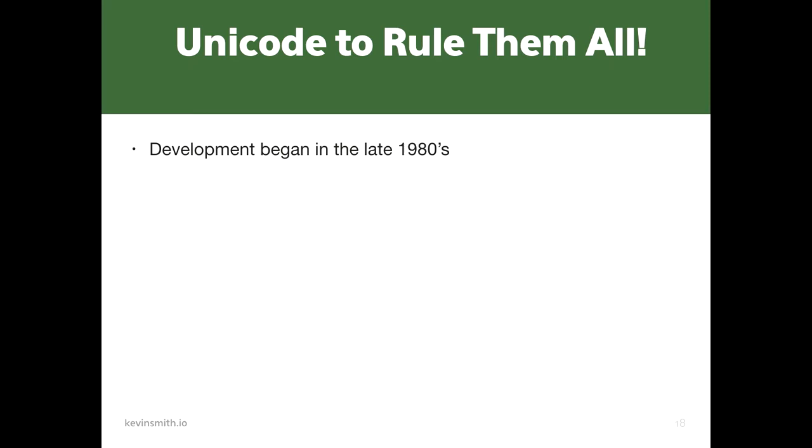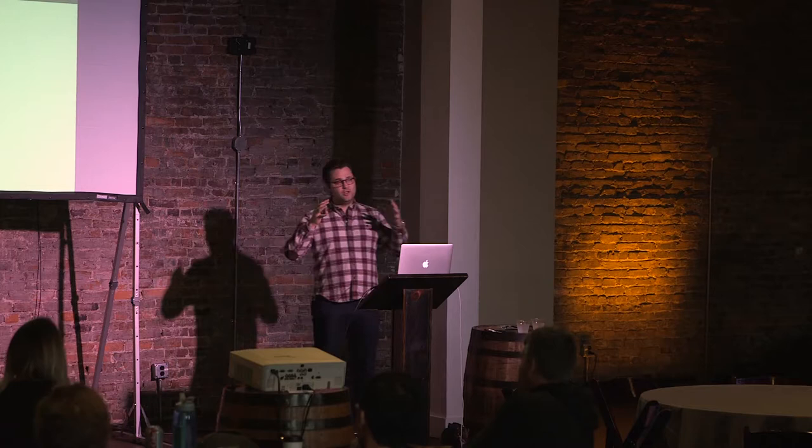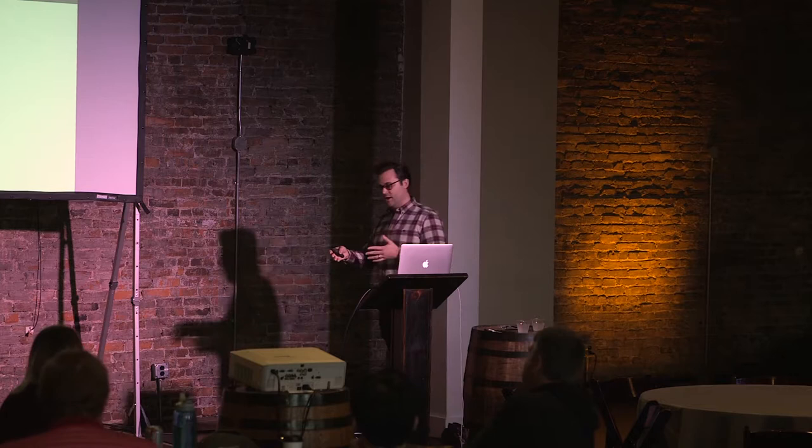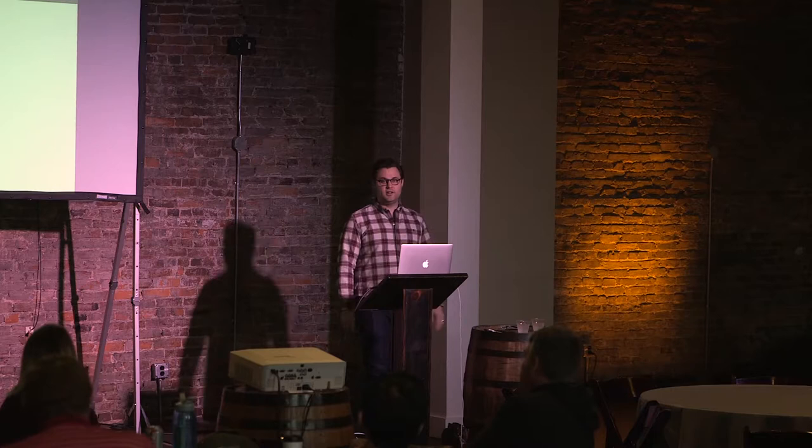Unicode development began in the late 1980s. Joe Becker from Xerox and Lee Collins and Mark Davis from Apple started investigating what it might take to have one universal encoding that would cover everything. If you use four bytes to determine your characters, you've got over four trillion possibilities — that would cover all the characters used in all human languages and more.